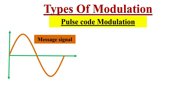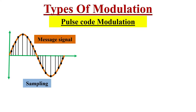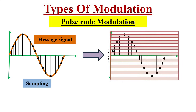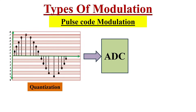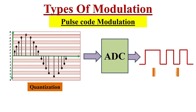Now let's move to pulse code modulation (PCM). In PCM, the message signal is sampled at finite time intervals, and each sampled value is quantized using a quantization process. Then, by using an analog-to-digital converter, the message signal can be retrieved. For example, if the sampled value is encoded in 8 bits, then for every sampled value we will get a pulse code of 8 bits. We will discuss pulse code modulation in detail in another video.